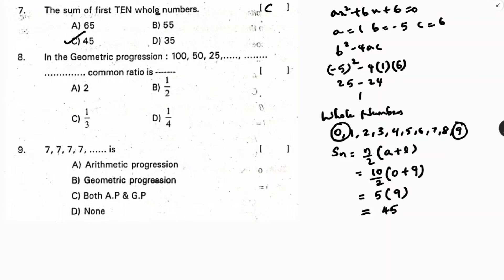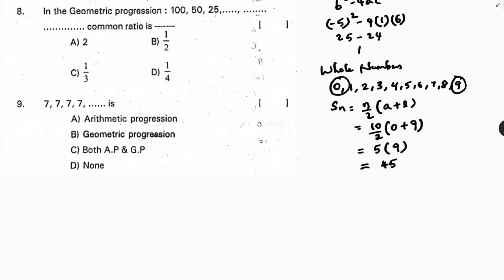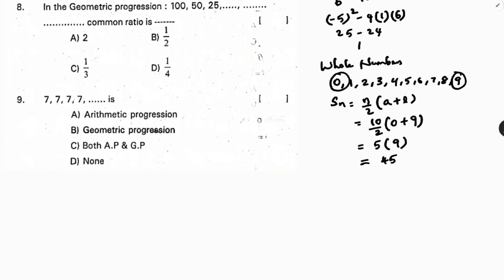Next: find the common ratio of a geometric progression. The common ratio formula is a₂/a₁. Here the second term is 50 and the first term is 100, so the common ratio is 50/100 = 1/2. Correct option is B.